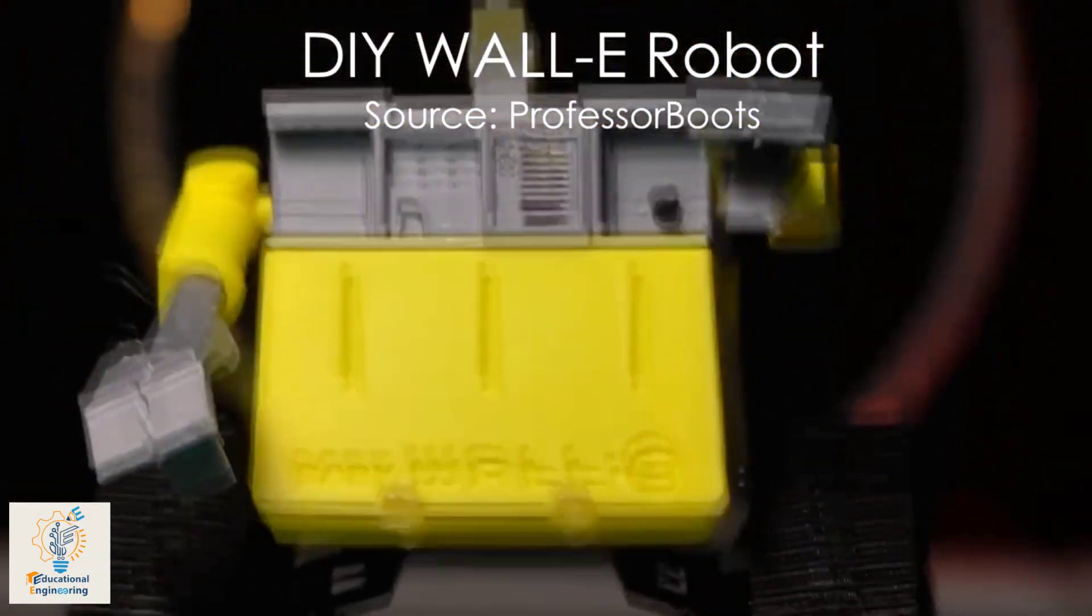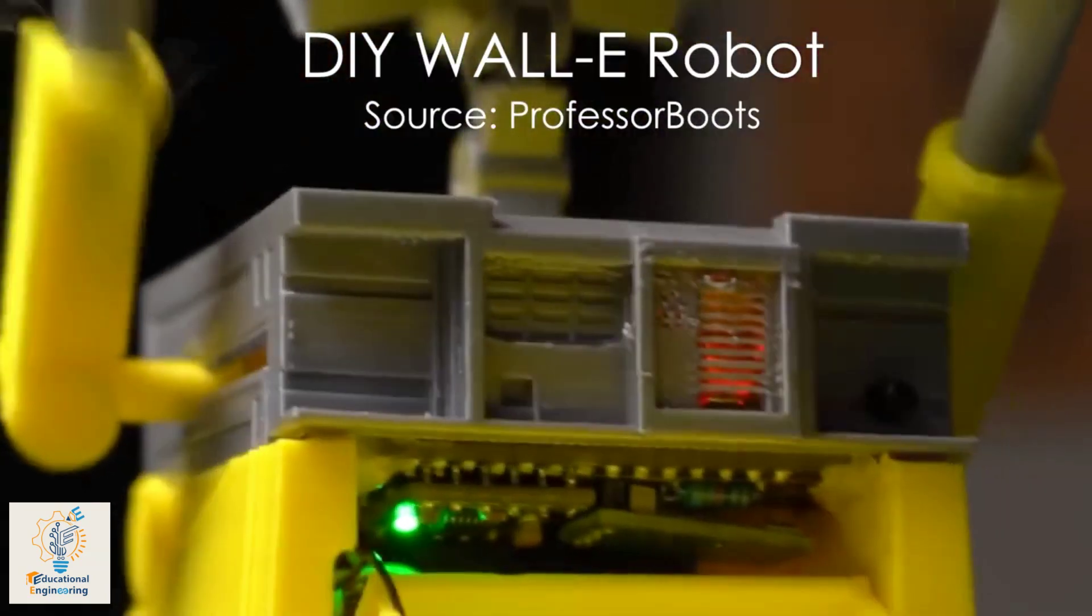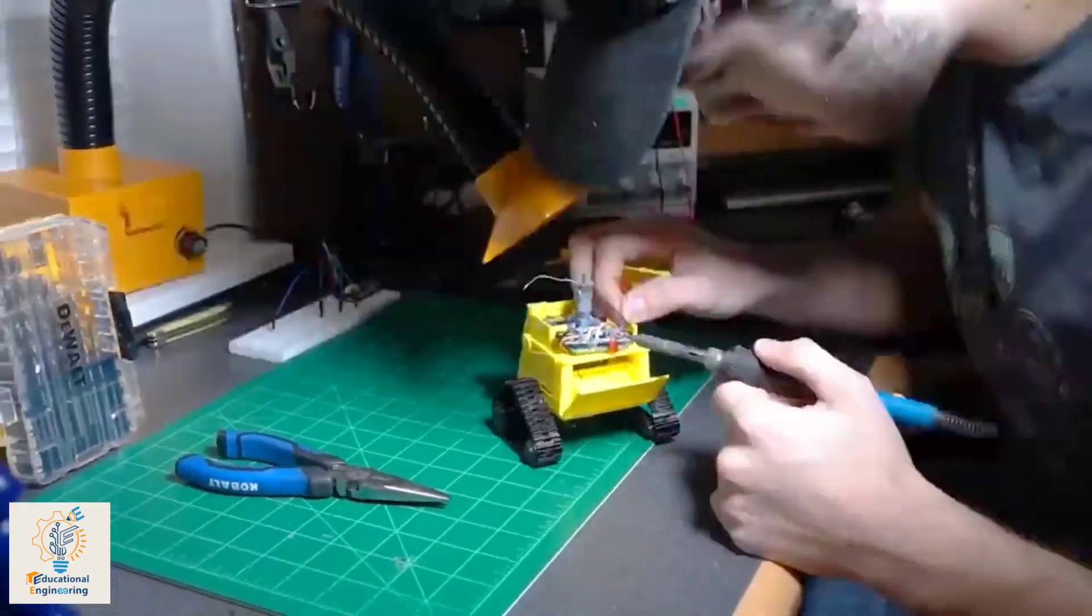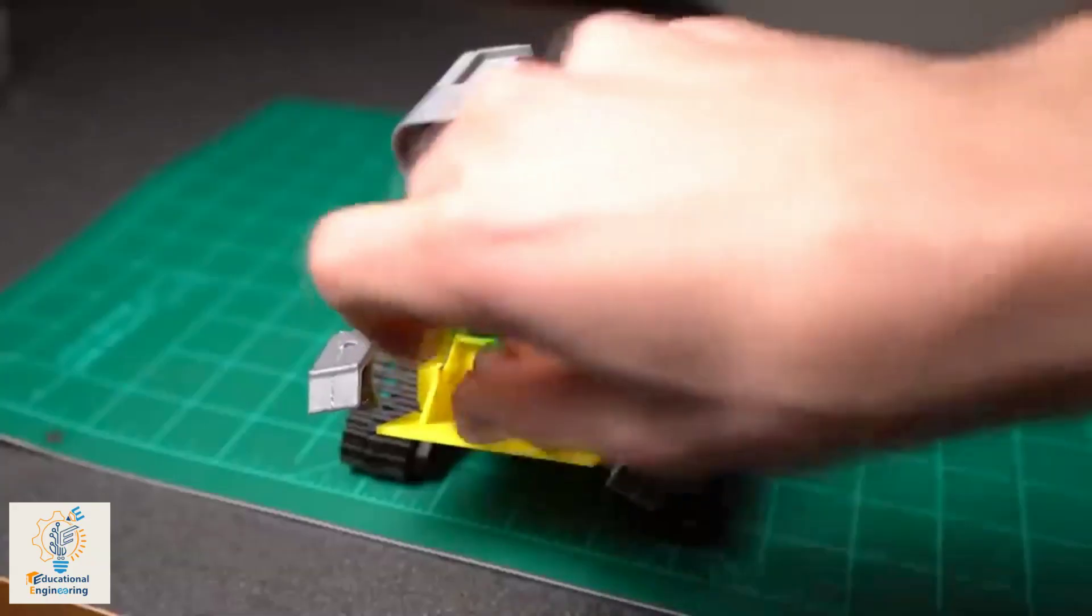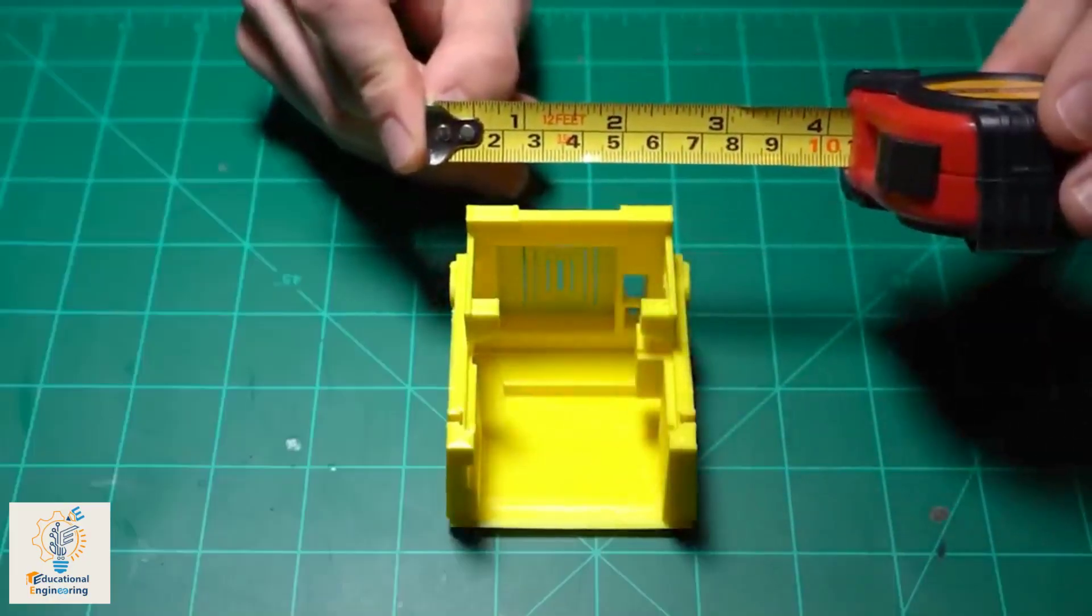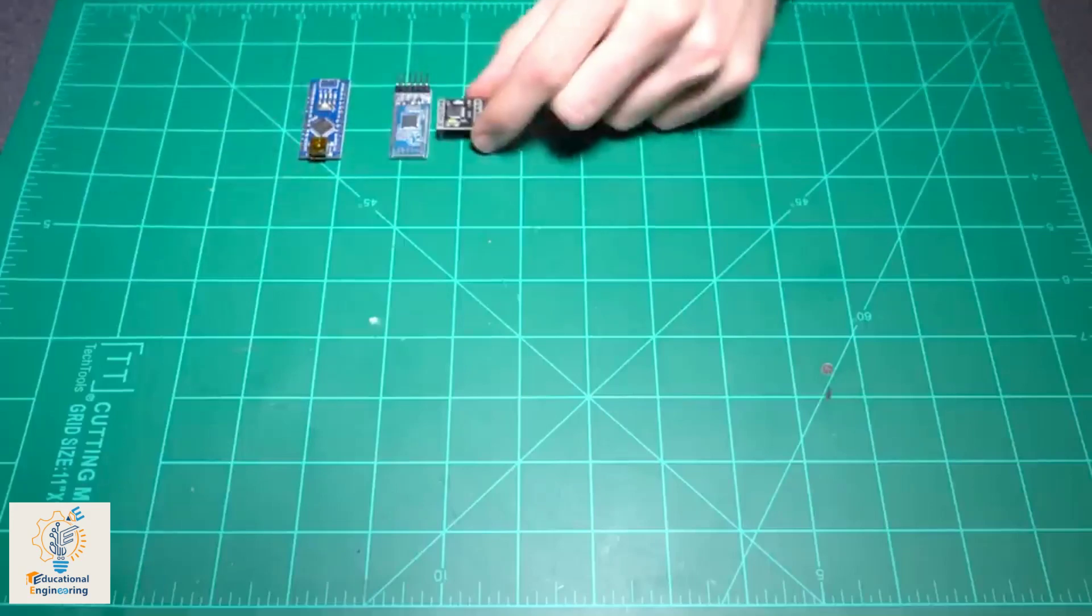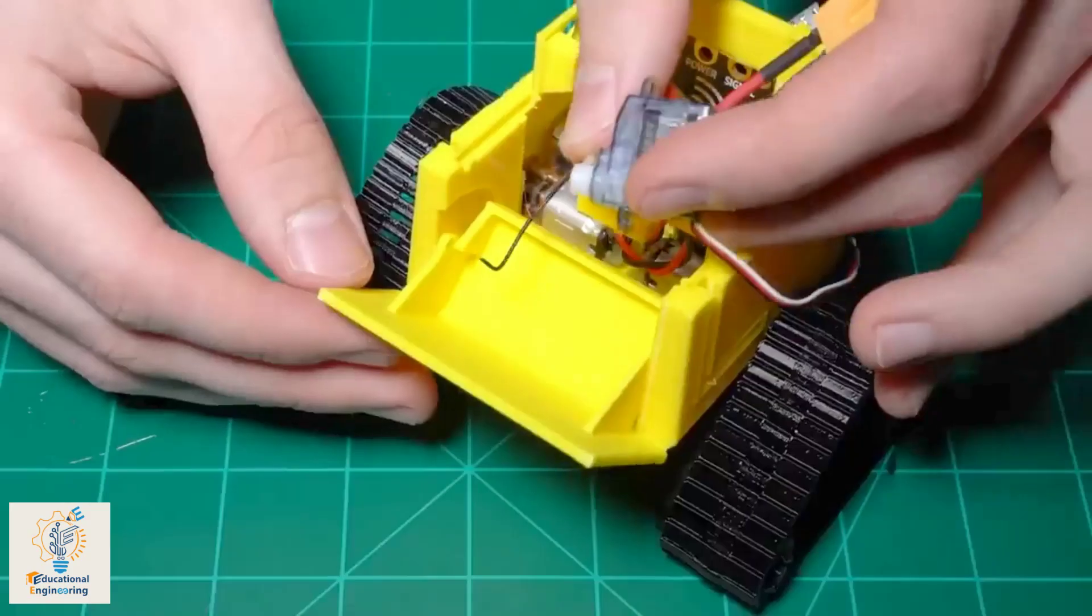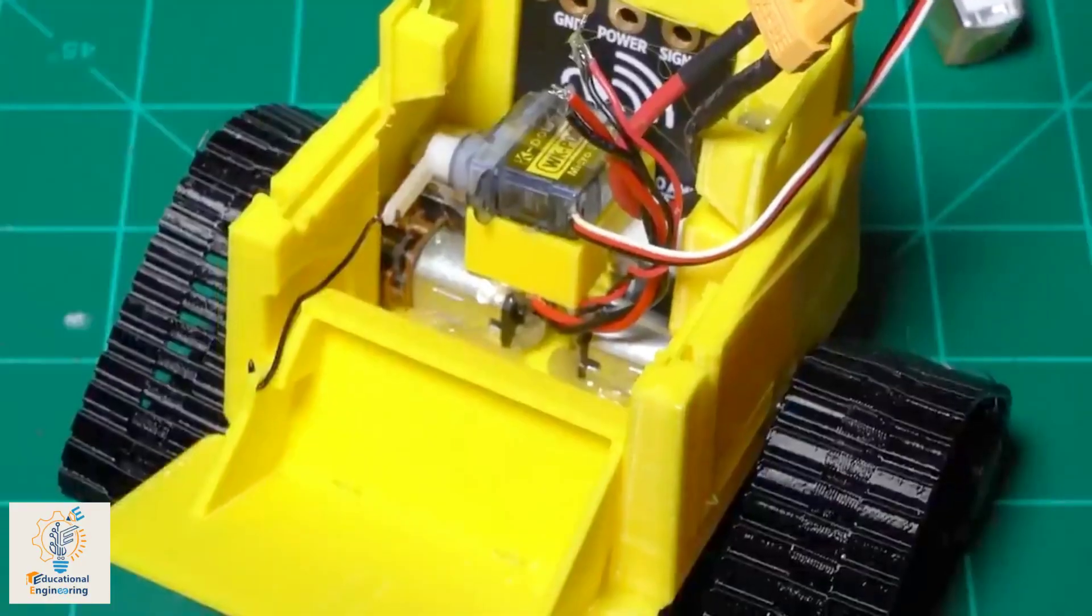Next on the list, we have the WALL-E robot. Professor Boots tried to build this one cute and tiny with the purpose of delivering gifts. He tried to keep the complete length below 10 centimeters, so he selected the components wisely. He also made sure that the storage compartment worked fine.